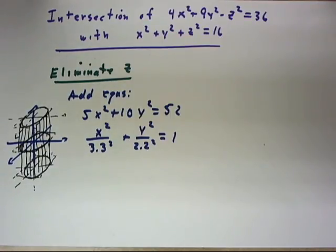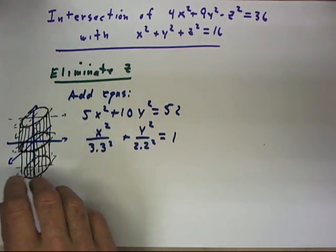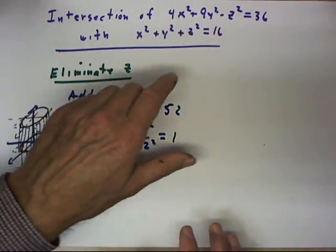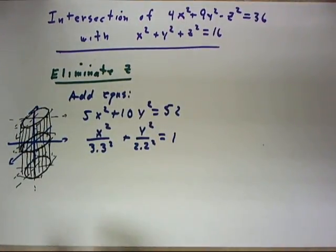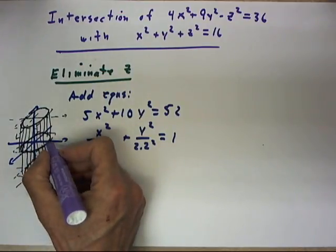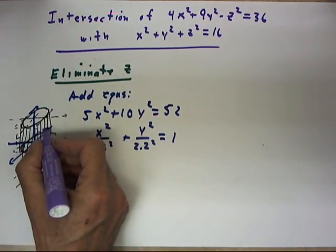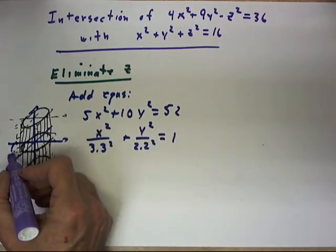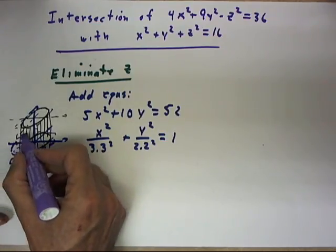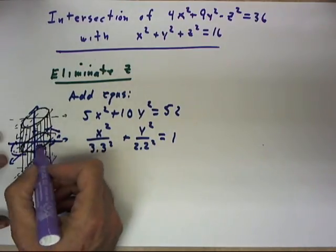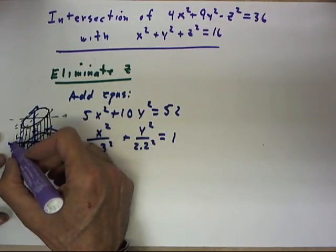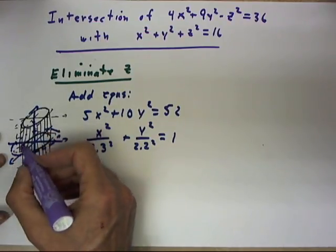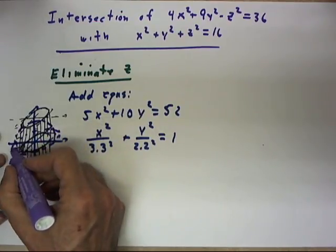Now, I'm not going to attempt to superimpose the graph of our quadric surface. But you recall that the quadric surface for the sphere, well, maybe we can just about superimpose the quadric surface for the sphere. The quadric surface for the sphere is going to have radius 4, meaning that the sphere is going to lie somewhere a little bit outside of this ellipse, at least down here in the xy plane. I'm going to dot the graph of the circle where it intersects the xy plane.